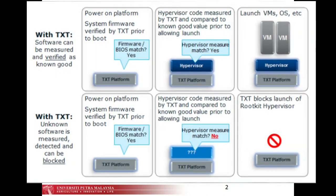In the first step, the platform is powered on, then the system firmware is verified by TXT prior to boot. After the firmware or BIOS matches, the hypervisor code is measured by TXT and compared to a known good value prior to allowing launch. After the hypervisor measure matches, it will launch the VMs, OS, etc. With the TXT tool, unknown software is measured, detected, and can be blocked.